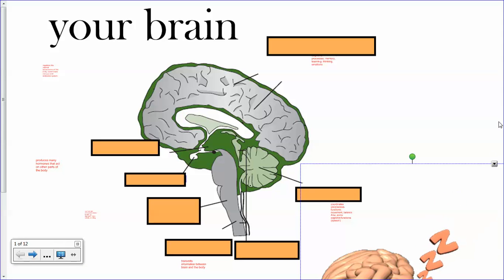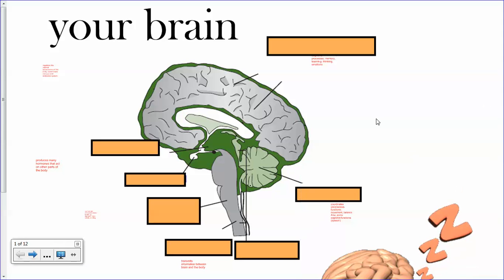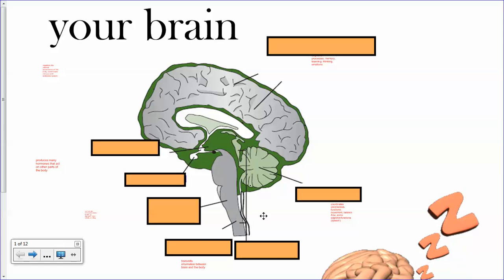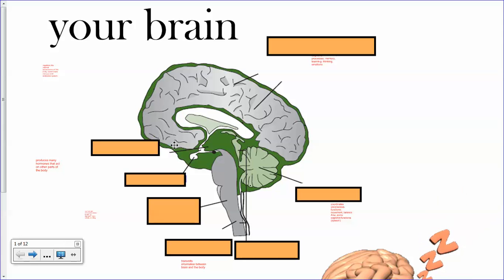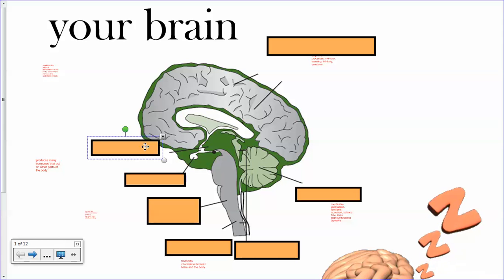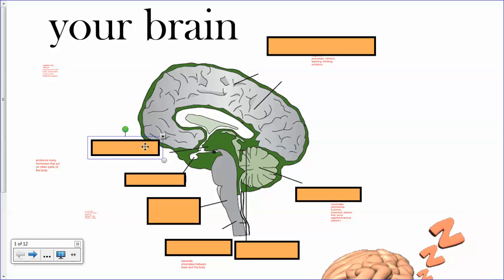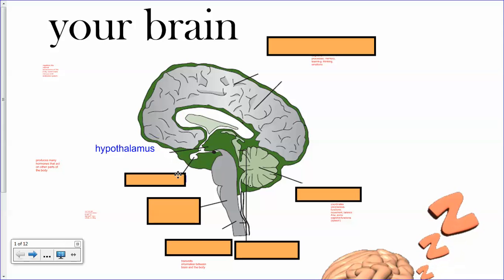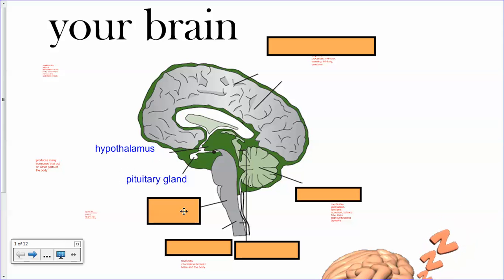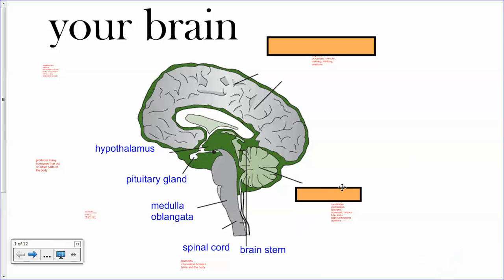Let's take a look at the human brain. You should be able to label a diagram like this and recognize the main parts. So let's look at the main names — you've probably heard about them: the cerebellum, the medulla oblongata.